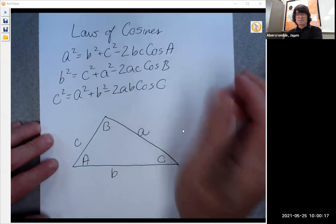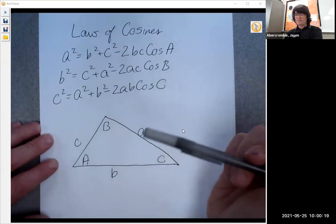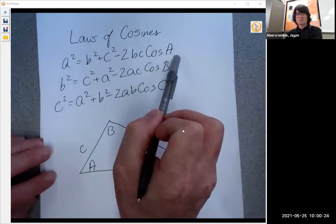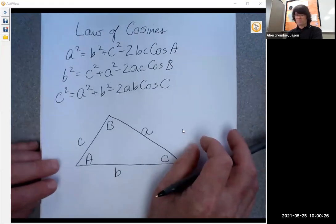If you have three sides and you want a certain angle, say you want angle A, then you would use this guy, put in A, B, and C, and then solve for cosine of A. So we're going to try some examples of these formulas.